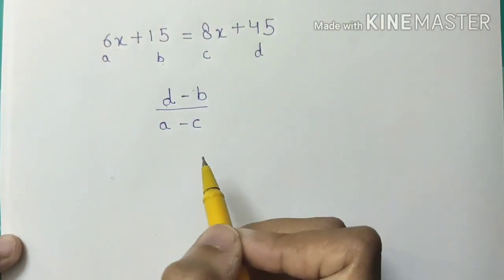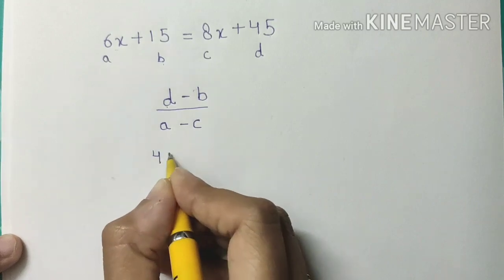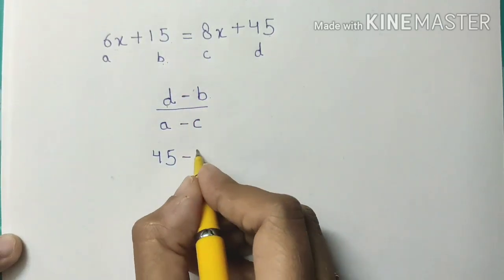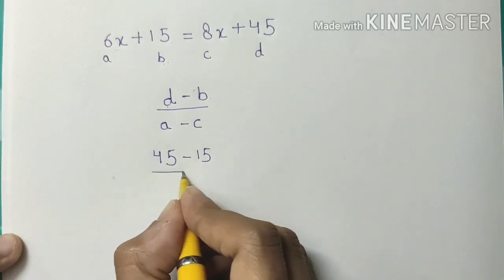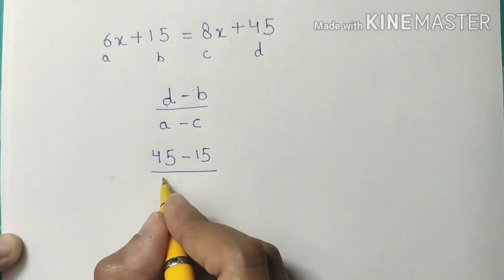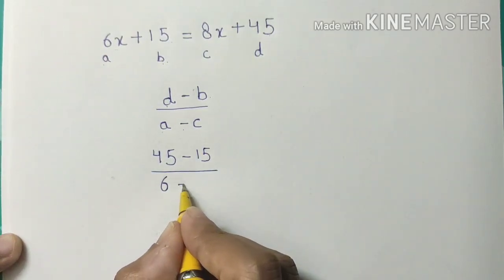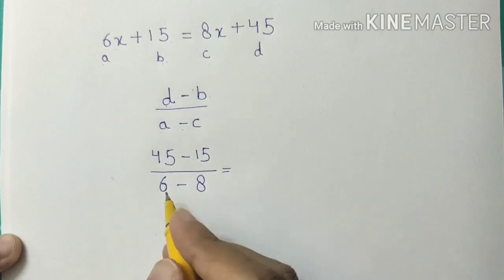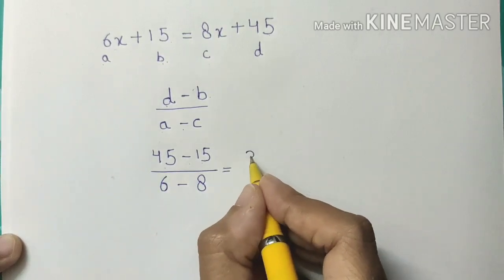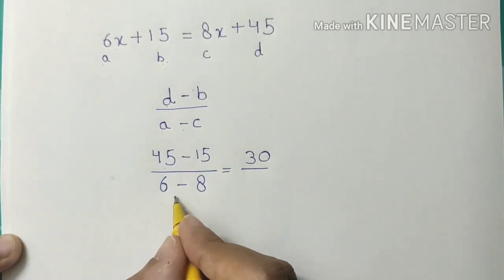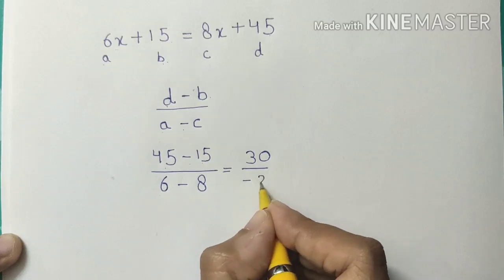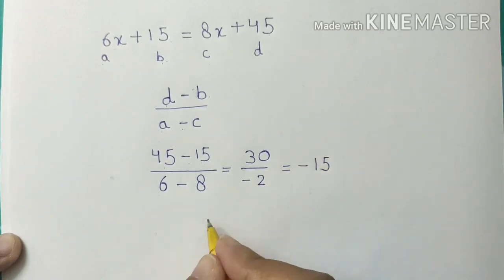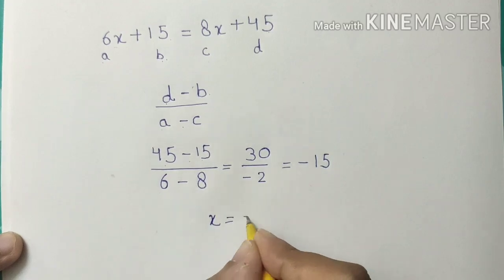The value of D is 45, so write 45 here. Minus B, which is 15 — write 15 here. Upon A, which is 6, minus C, which is 8. So 45 minus 15 is 30, upon 6 minus 8 is minus 2. When we divide 30 by minus 2 we get minus 15. So the value of x is minus 15.